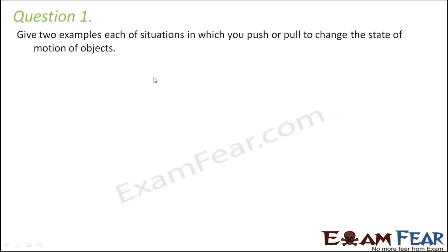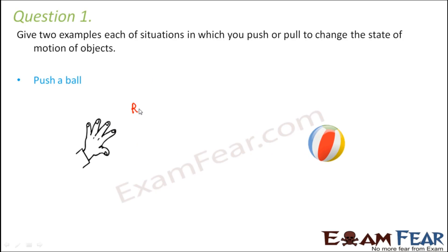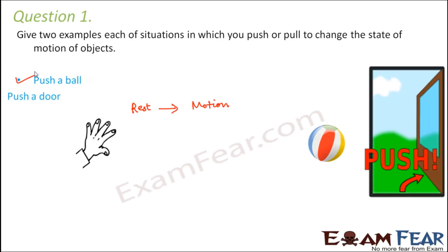Question number one: give two examples each of situations in which you push or pull to change the state of motion of objects. Let us first talk about push. If you push a ball, the ball which was earlier at rest now starts to move. The ball changes its state of motion from rest to motion, so pushing the ball helped to change its state of motion.